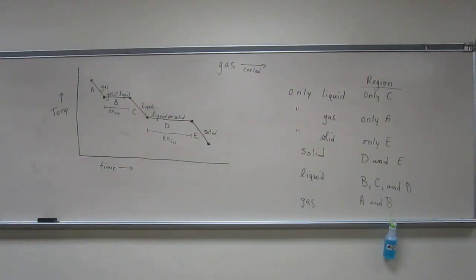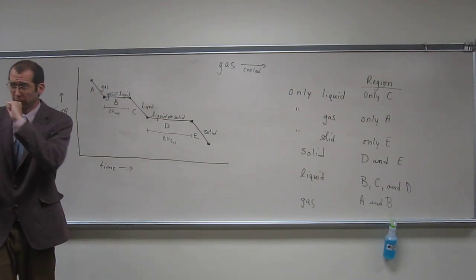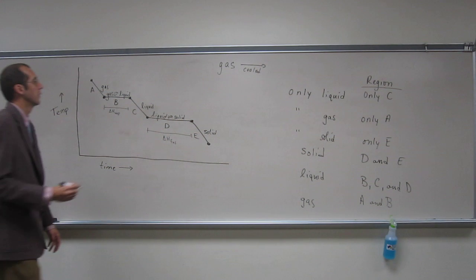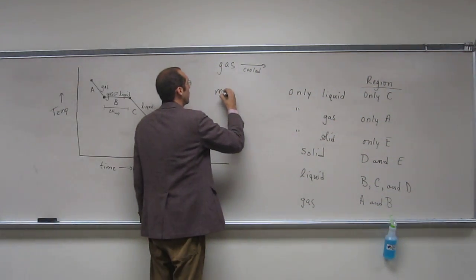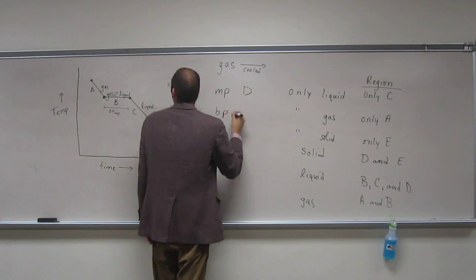Oh, I guess what it's saying, what it really asks is which part of this graph is showing the melting point. Where is the melting point indicated on this graph? D, right, so the melting point is D and the boiling point is B.